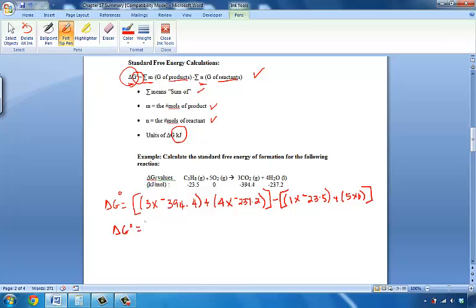Let's simplify this a little bit. We've got the value of three times negative 394.4, which will be negative 1183.2. And to that, we will add the value of four times negative 237.2, which will be negative 948.8. And that will take care of our products. We will subtract from that the reactant amounts, which will be one times negative 23.5, which is negative 23.5, plus zero.